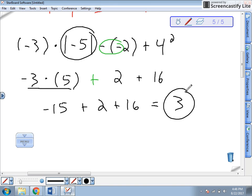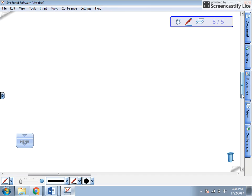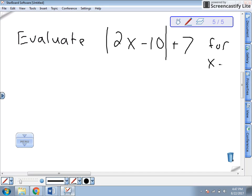Cool part about absolute values, we could also substitute it just like we've been doing before. So here's one more quick example I'd like to show you. If they give us a problem like this, evaluate. Absolute value of 2x minus 10 plus 7 for x equals 3.